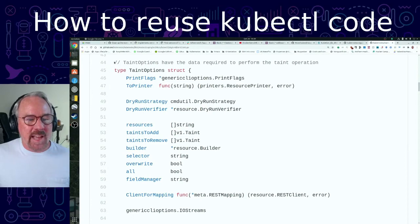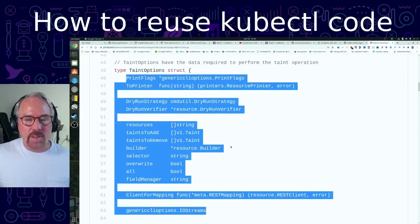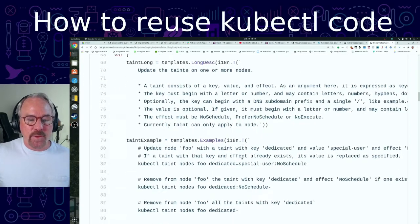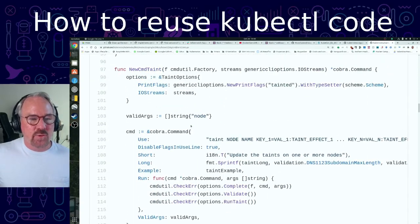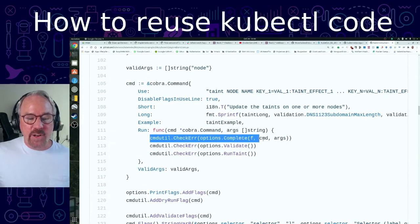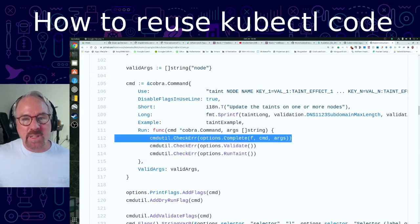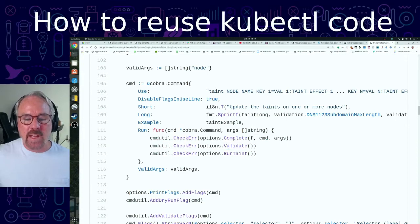And for our example taint command, there is the taint options. There is a taint options.complete, a taint options.validate, and then a taint options.run taint, which actually executes the taint functionality. So here is actually code in staging implementing taint, the taint command. And here is what the taint option structure looks like. So it's going to have particular fields that are necessary and used for the implementation of the taint command. And then further down, we actually see how this taint option structure is used. So here's the command. Here is where we created the taint options. And then here are the three invocations of the functions necessary to implement the taint command. The three that I mentioned before: complete, validate, and run taint, the execution.